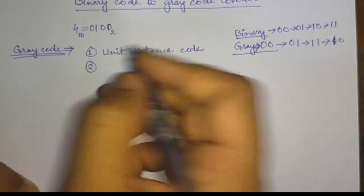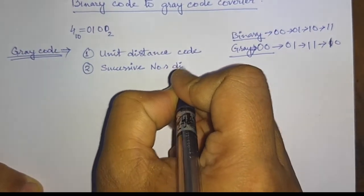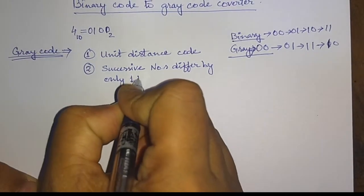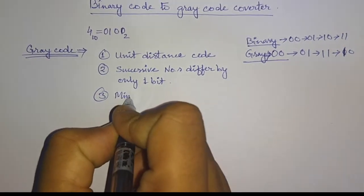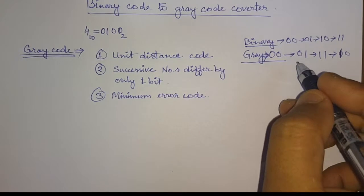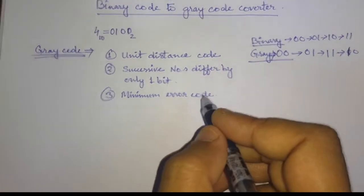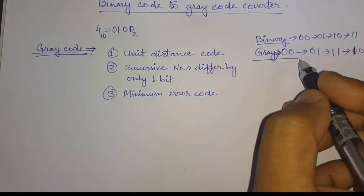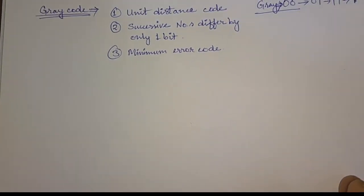There are further points about gray code. Successive numbers differ by only one bit. And the third point: we have minimum error code. That means we need to switch only one bit between two consecutive numbers. It is called the minimum error code because between two consecutive numbers, we have only single bit difference, and that is why we will have a minimum number of errors.